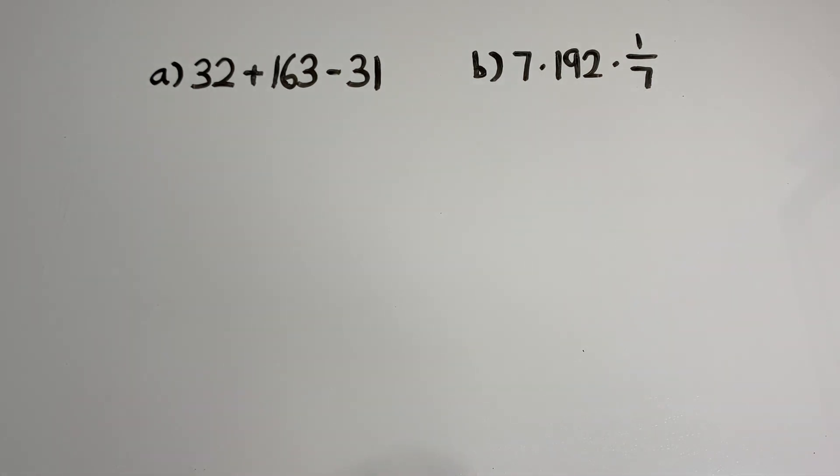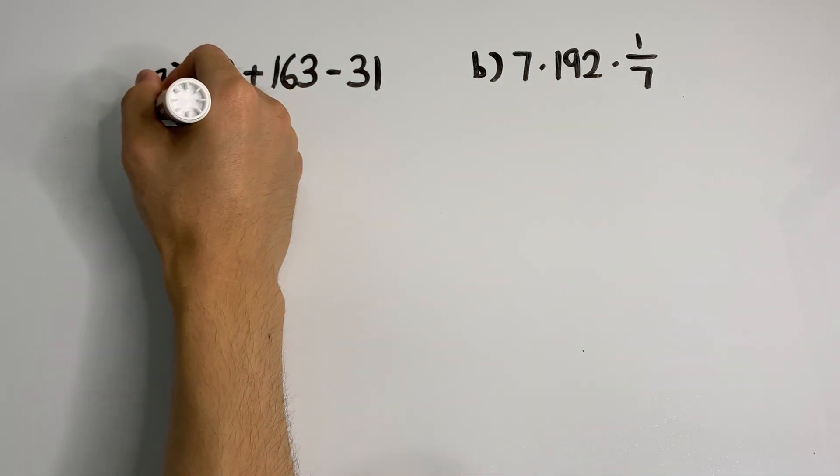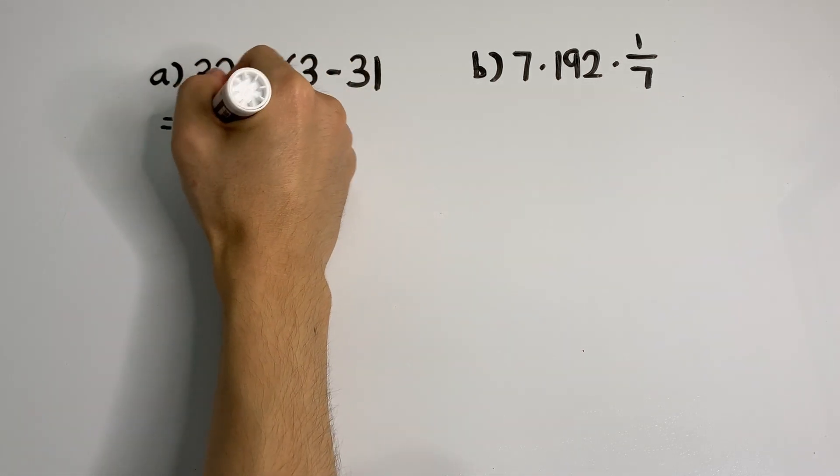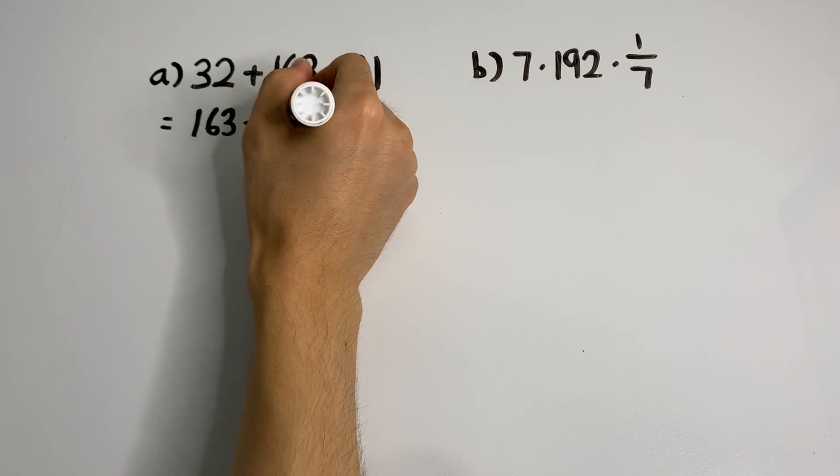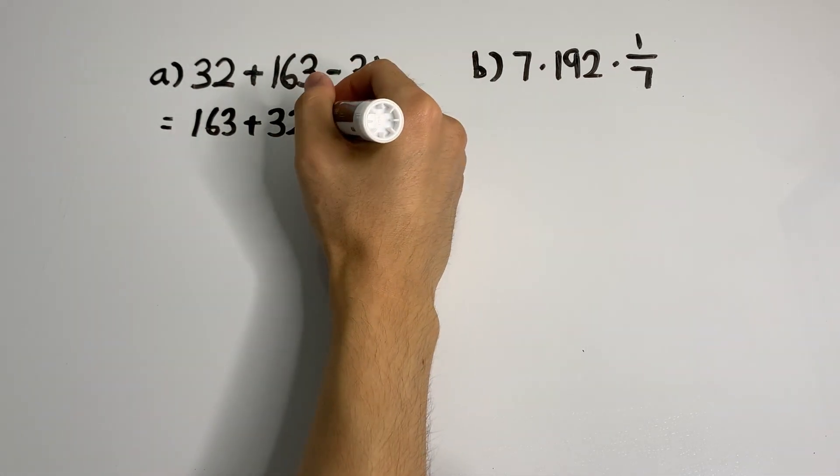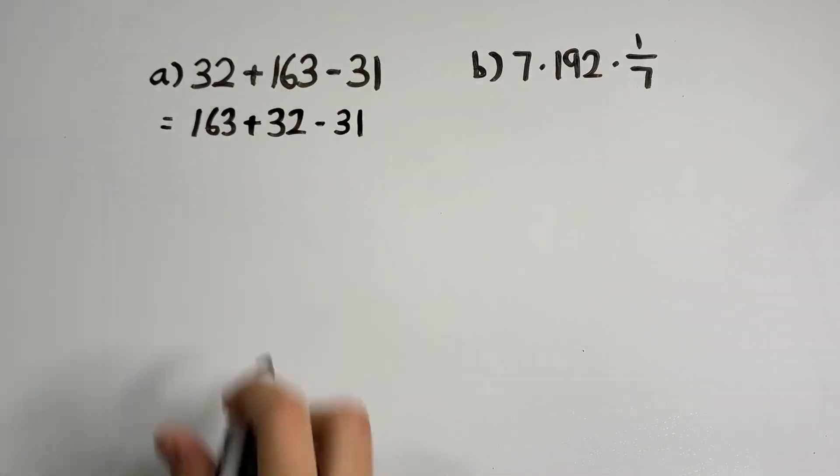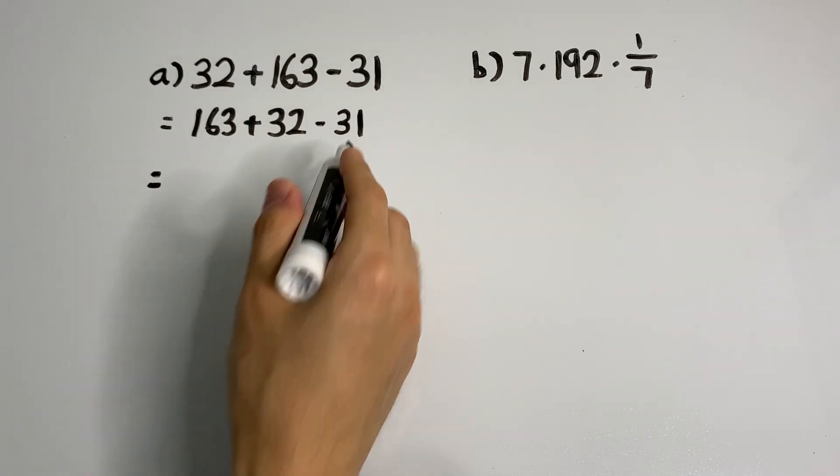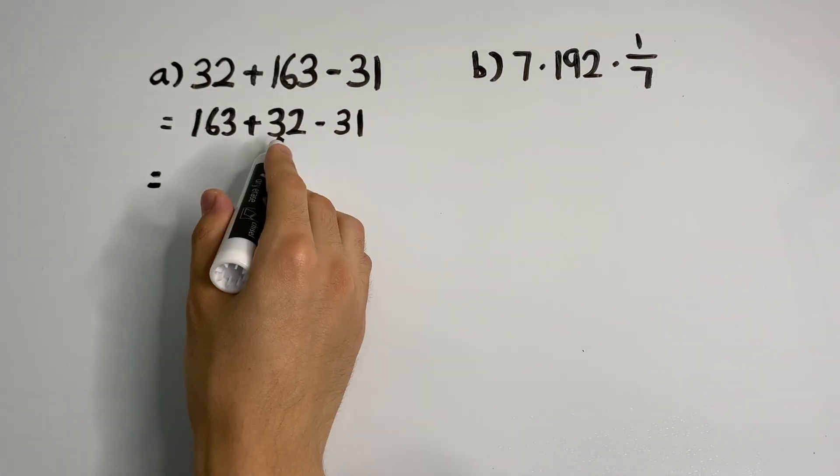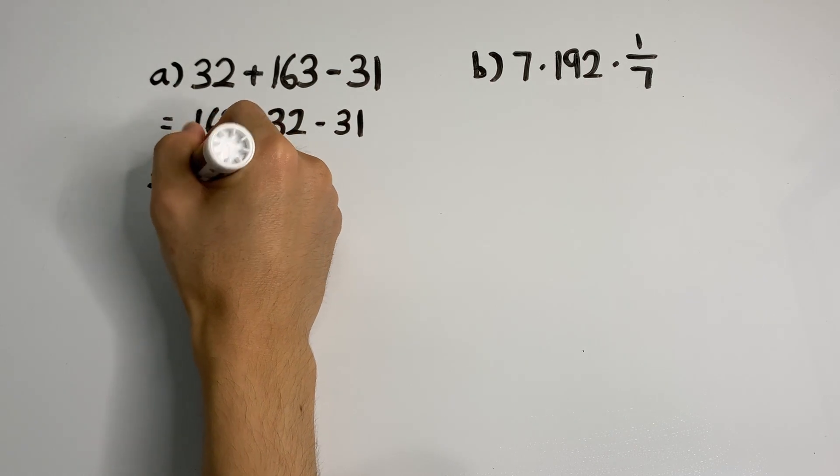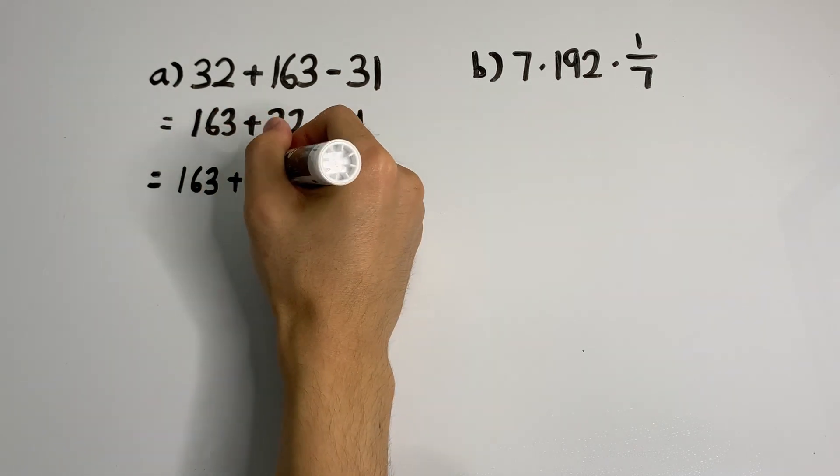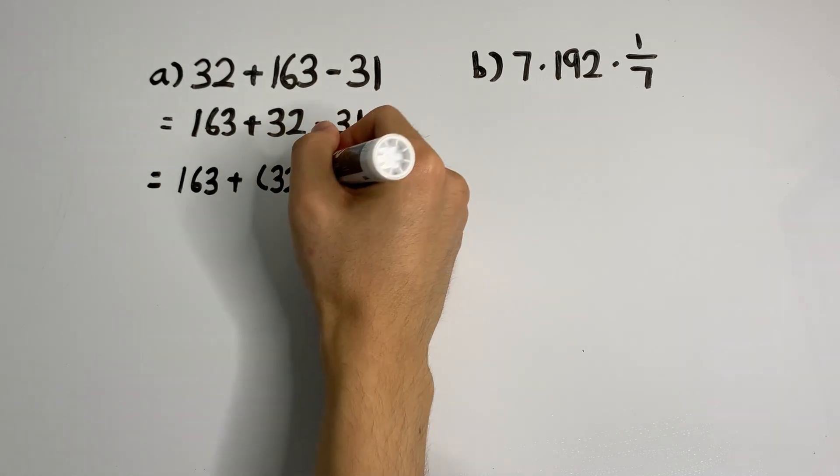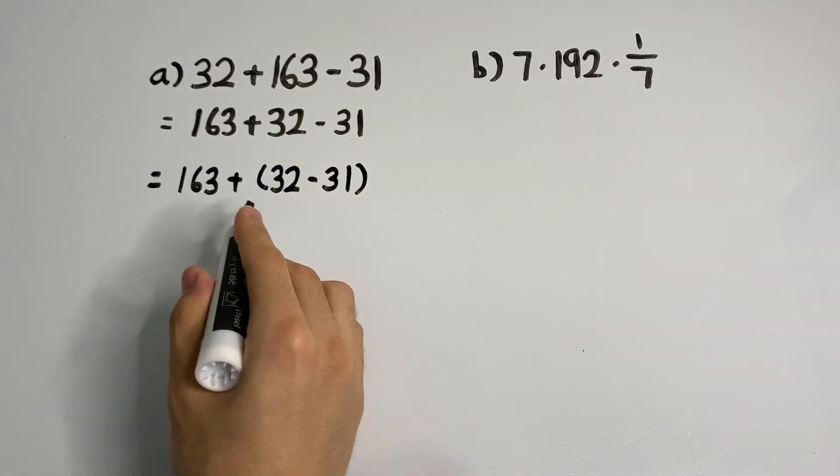By the commutative property, we know that 32 plus 163 is the same as 163 plus 32, and we can't forget about our minus 31 at the end. Now by the associative property, we can add the last two terms together first instead of the first two terms. So it would be 163 plus 32 minus 31 first.